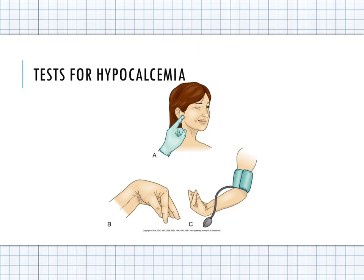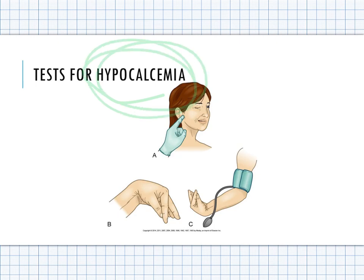Clinical tests for hypocalcemia include Chvostek's sign: lightly tap over the facial nerve in front of the ear — if the patient has muscle spasms, it is positive, suggesting tetany and hypocalcemia. Trousseau's sign: inflate a blood pressure cuff above the patient's systolic blood pressure and if within three minutes the patient has carpal spasms of the hand, that is a positive Trousseau's sign — also a sign of tetany or hypocalcemia. Know these tests for hypocalcemia.